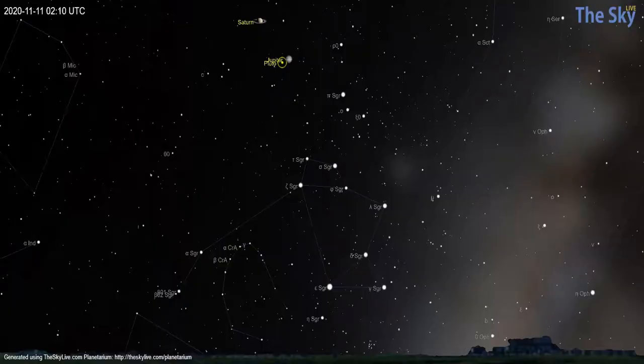Jupiter and Saturn are hanging in the southwest. Jupiter is far and away the brightest object in this region of the sky, and Saturn shines with a bright yellow hue just a few degrees above and to the left of the king of the solar system.